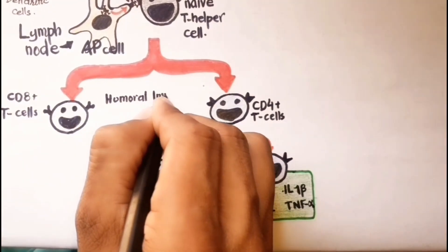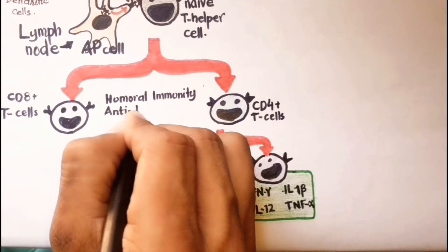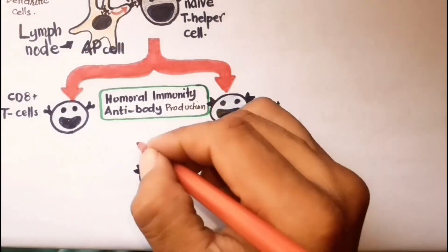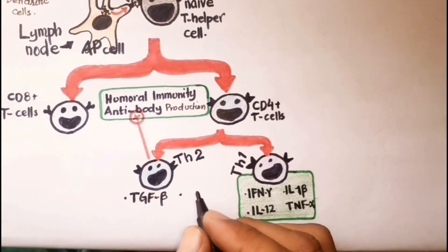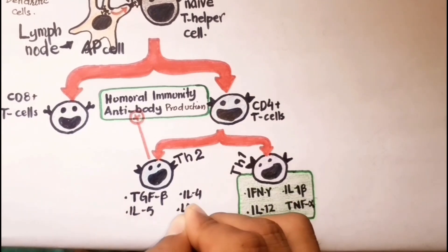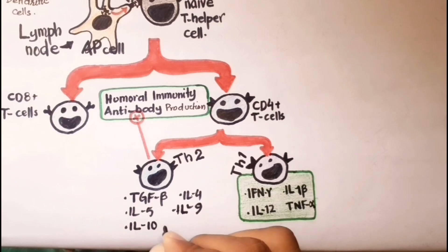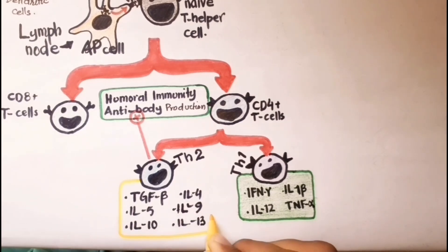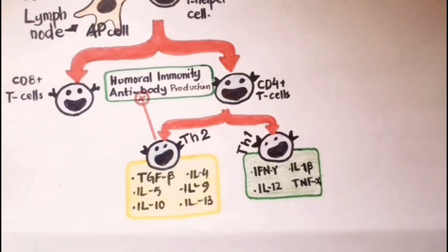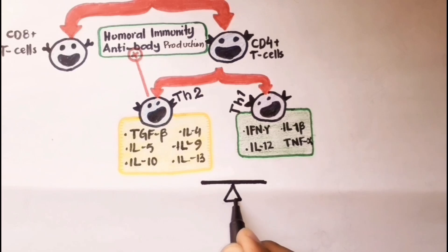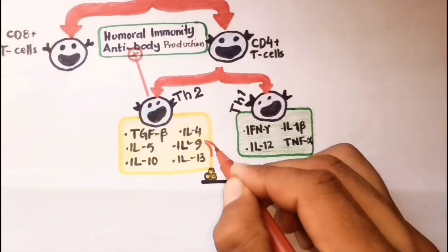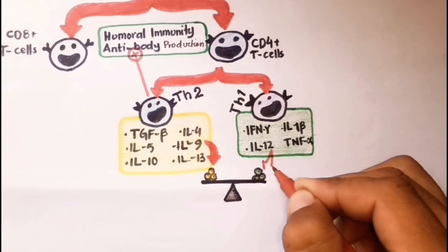T helper type 2 cells activate humoral immunity and antibody production, releasing anti-inflammatory cytokines such as TGF-beta, IL-4, IL-5, IL-9, IL-10, and IL-13. TGF-beta induces maturation of naive T helper cells to T helper 17 cells, which are potentially protective factors against pathogens. A balance between T helper type 1 and T helper type 2 lymphocyte activity is observed in healthy adults with COVID-19 infection.